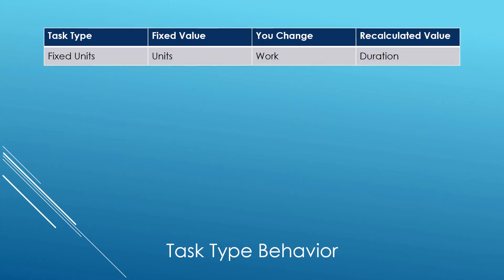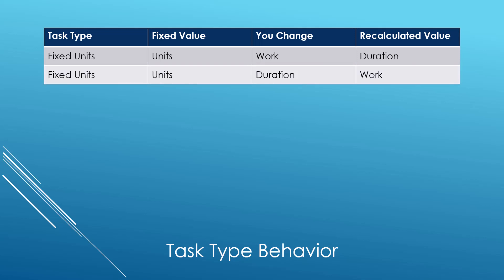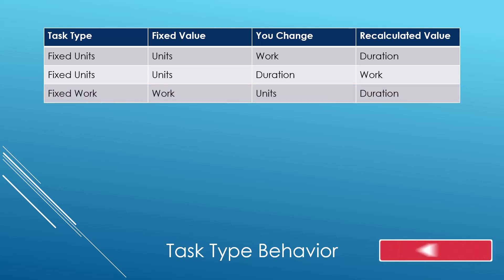Here's how task types work in the real world. On a fixed units task, the units value is locked. If you change the work, Microsoft Project will recalculate the duration value — because it's the only number left. On a fixed units task, the units value is locked. If you change the duration, Microsoft Project will automatically recalculate the work, because it's the only number left.